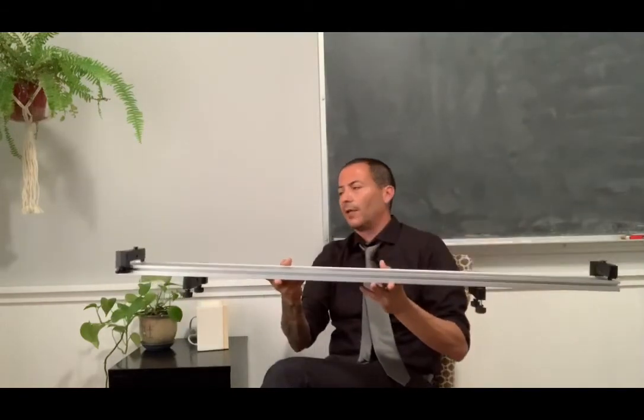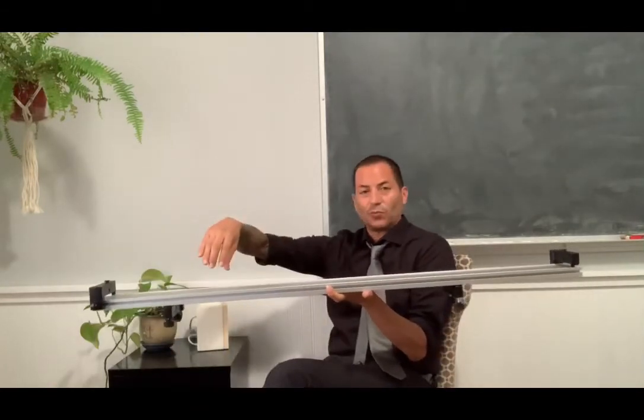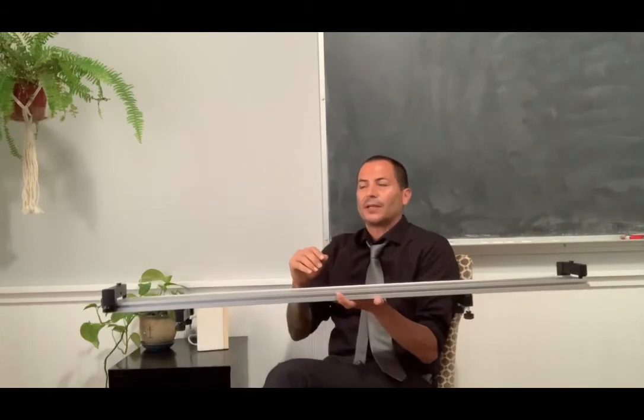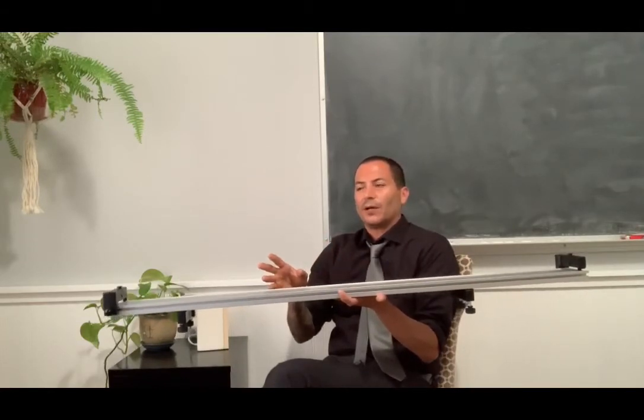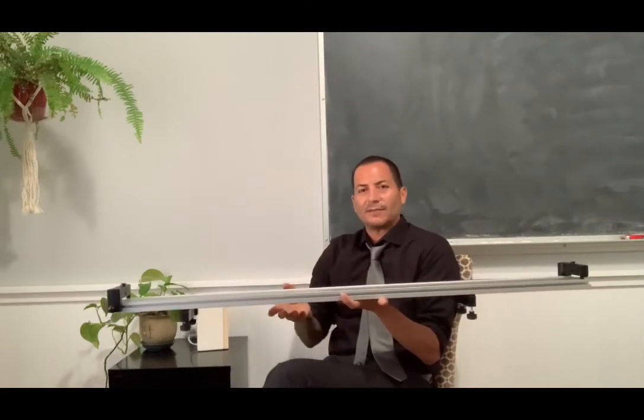We're going to use the Pasco Smart Cart. With the Pasco Smart Cart, the position of this cart that has wheels on it that I'm going to roll across this track is connected to some software, so that software acquires data that gives me the position of the cart at any given instant of time.